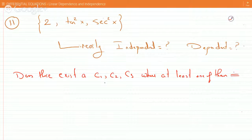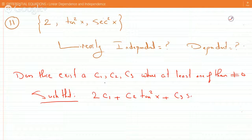such that the first times C1 plus the second times C2 plus the third times C3 equals zero. Does this happen?